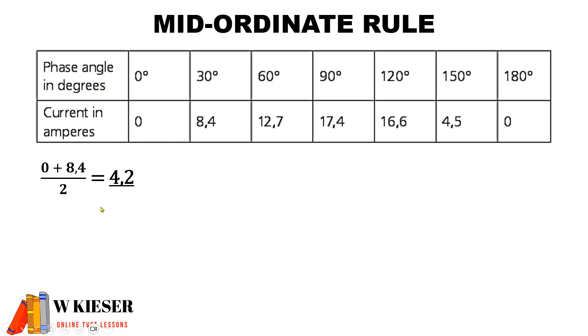So 0 plus 8.4 divided by 2 gives you 4.2. 8.4 plus 12.7 divided by 2 gives you 10.55. 12.7 plus 17.4 divided by 2 gives you 15.05.